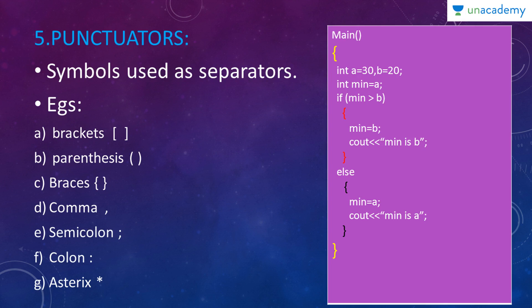Next, let us go to punctuators which is the fifth type of token. Punctuators are symbols used as separators. In the program, you can use them as separator. Examples here are brackets, parentheses, braces, comma, semicolon, colon and asterisk.